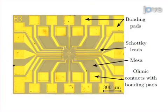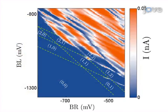The final step is to fabricate the bonding pads and the larger leads using photolithography. Ultimately, stability diagrams are measured at low temperature to show that the few electron regime can be reached.